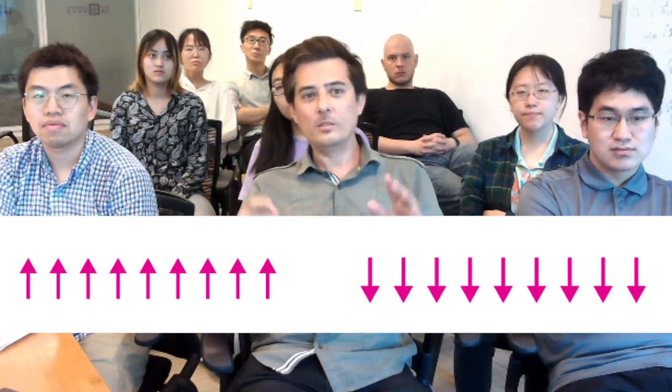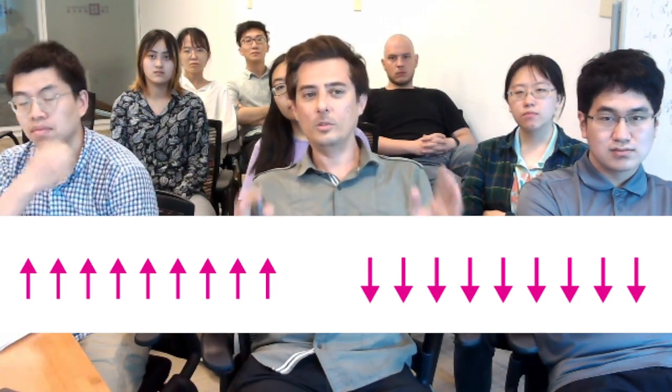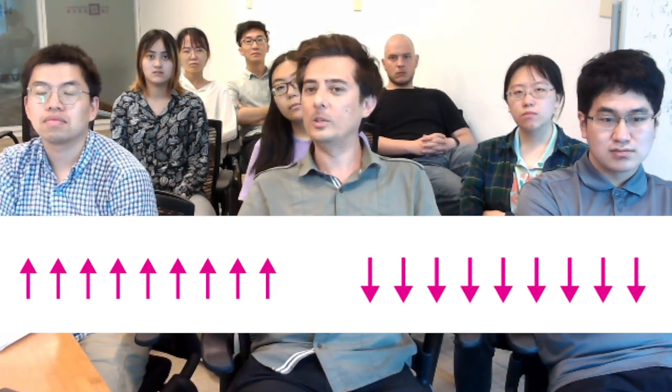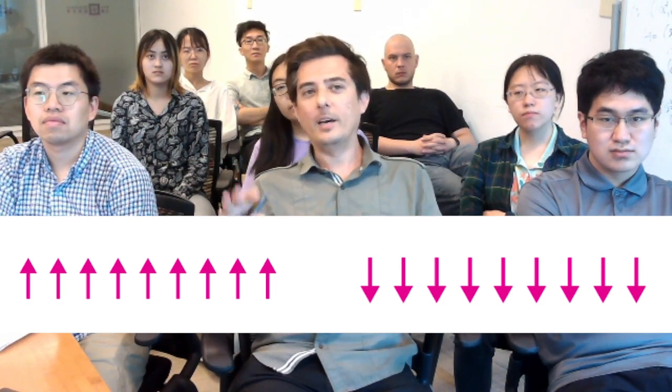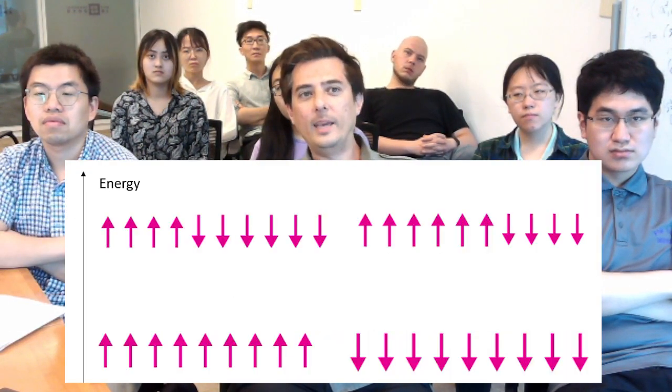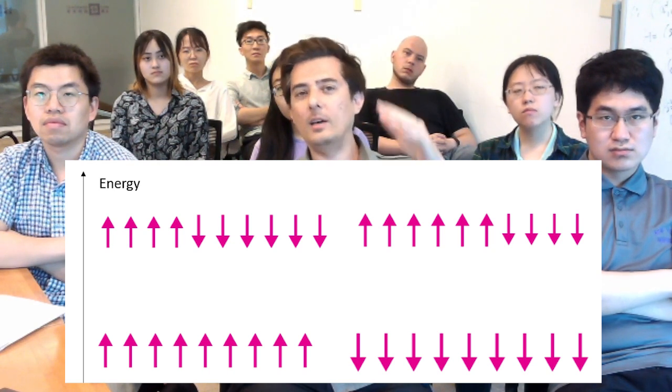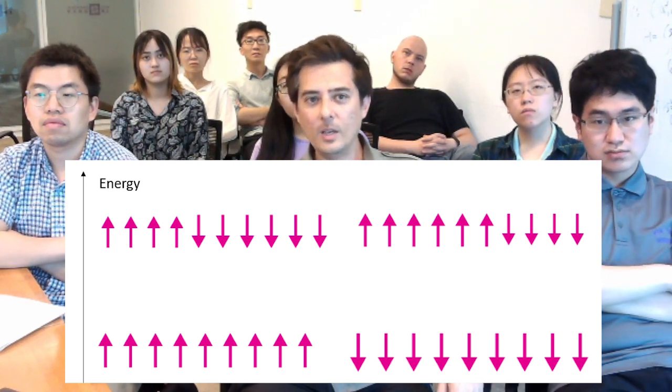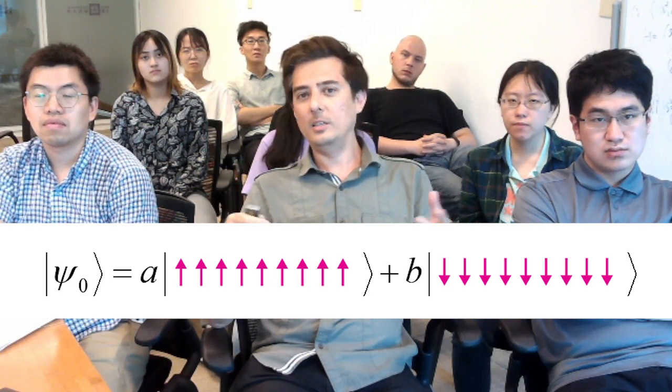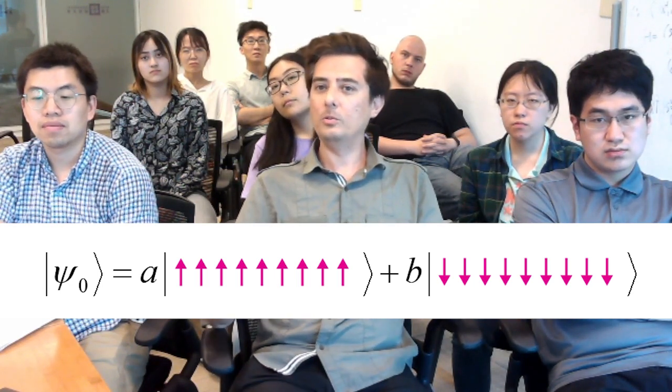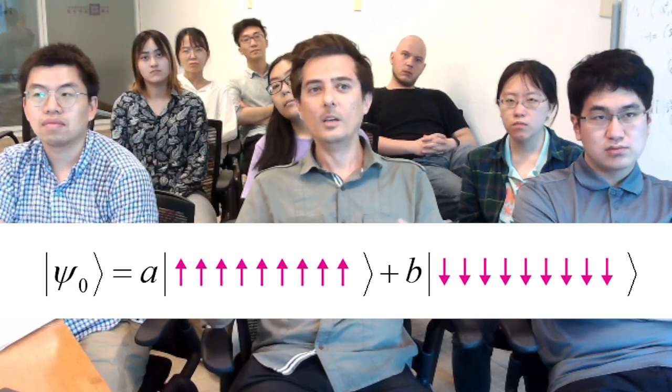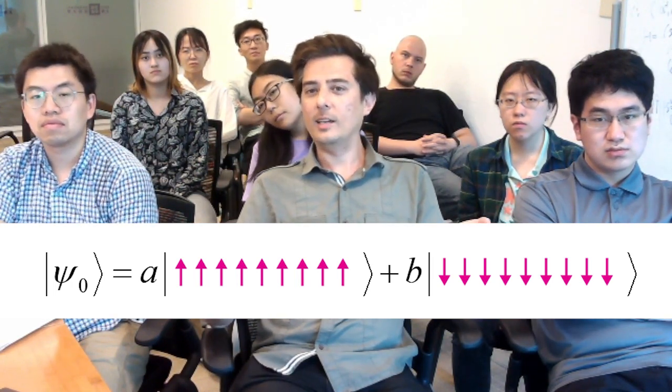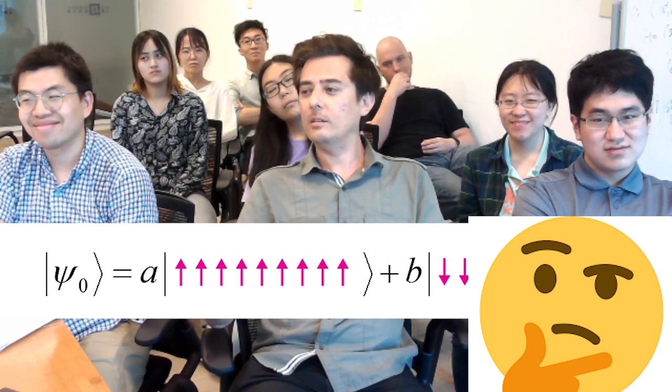You can have all the spins pointing up because each spin wants to be facing the same direction, or you can have all the spins pointing down. You can have other configurations like domains of ferromagnetic regions, but these are high energy states. The general ground state of the Hamiltonian is actually a superposition of those two states, all spins up or all spins down, but we never really see such a state. So why don't we see this kind of state?